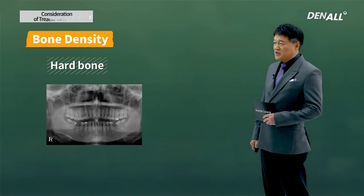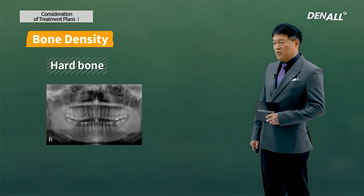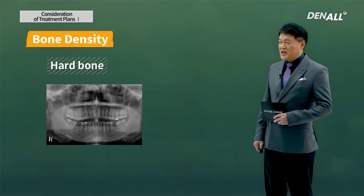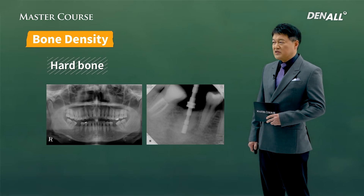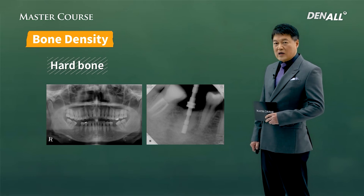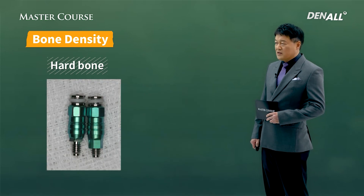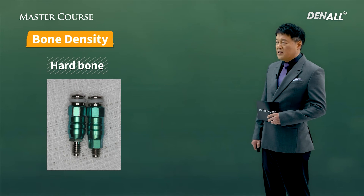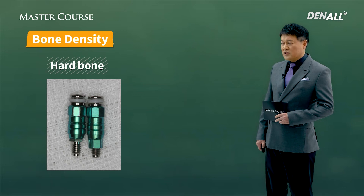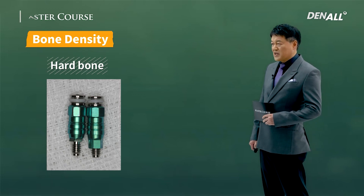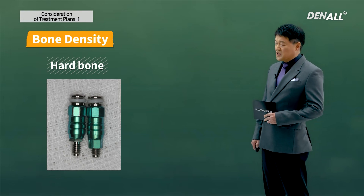I was going to place the implant at number 46 — it's very radio-opaque and we can assume it's a very hard bone. If we don't drill sufficiently and just place the implant, serious consequences can occur. The mount had fractured and broken — I used a wrench and tried to place the implant a little bit deeper, but the fixture broke and fractured, with the mount getting stuck.